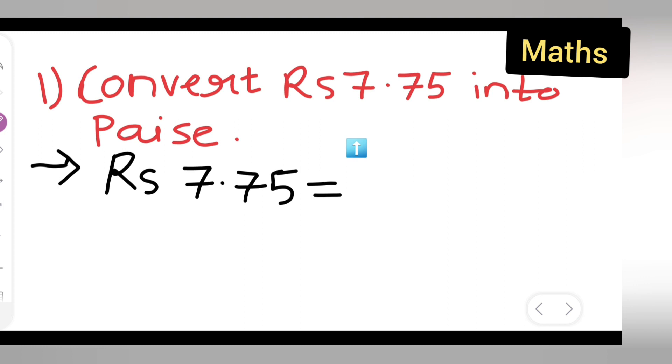What you will have to do is, if you want to remove the decimal point, you can remove it, but what you will have to do for that: write down 700 plus 75 Paise. Write down Paise over here.